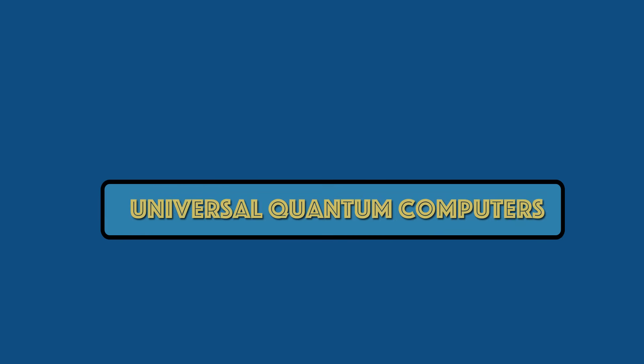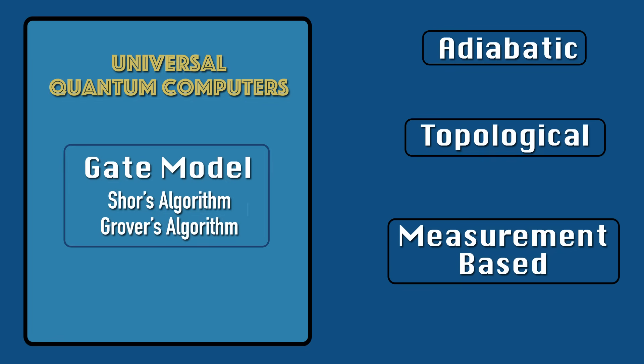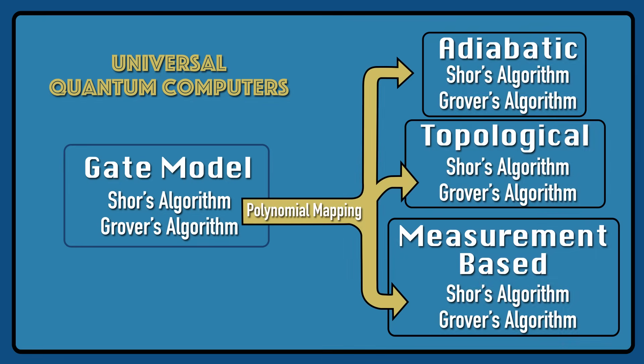There have been some other approaches to quantum computing that have been shown to be equivalent to the gate model approach, and these are all known as universal quantum computers. To be classified as a universal quantum computer it needs to be shown that there's a mapping of the specialized gate model algorithms to these other forms that doesn't take up too much time — specifically a polynomial time mapping and a polynomial resource mapping from the gate model approach to these other approaches.